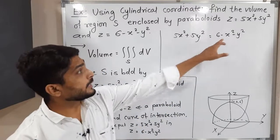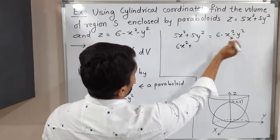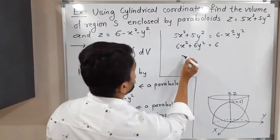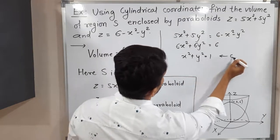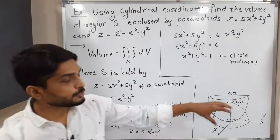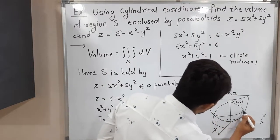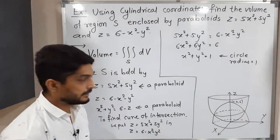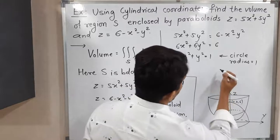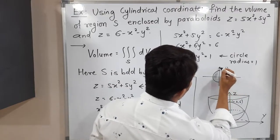Shifting x² and y² to the left side: 5x² + x² = 6x², and 5y² + y² = 6y², so we get 6x² + 6y² = 6. Dividing through by 6 gives x² + y² = 1. This is the equation of a circle with radius r = 1. So where the two paraboloids intersect, we get a circle of radius 1.